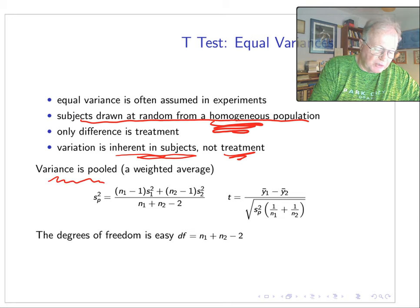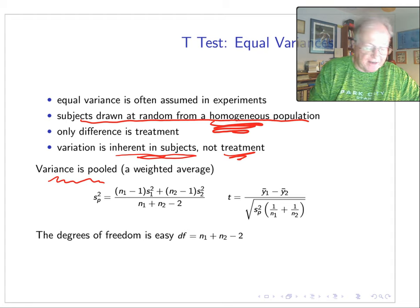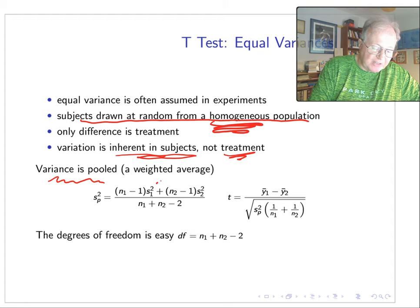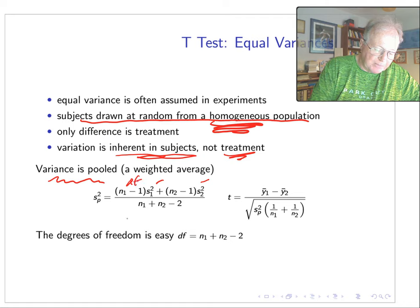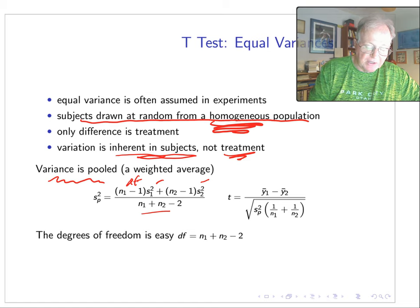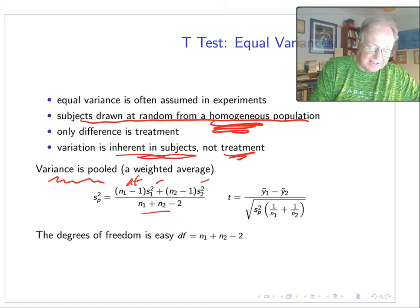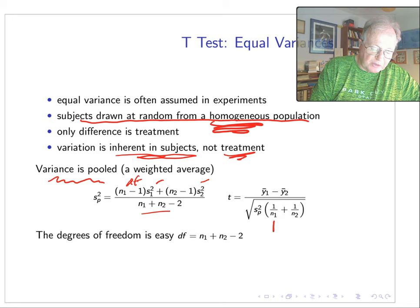Since we get two estimates of the variance from the two samples, we need to somehow compile those together. So what we do is we form what's called a pooled variance, it's a weighted average. We take each individual variance weighted by its degrees of freedom—so degrees of freedom show up in the numerator and denominator, and that gives us the pooled variance. Then the test statistic is simply the difference in the sample means divided by the standard error with contributions from both samples.